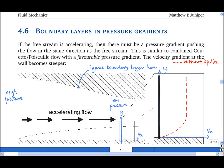Now if we think back to the case of combined Couette-Poiseuille flow, this situation is a bit like Couette flow with a favorable pressure gradient. That is to say, with the pressure gradient pushing the fluid in the same direction as the mean flow.